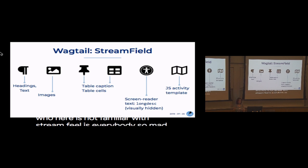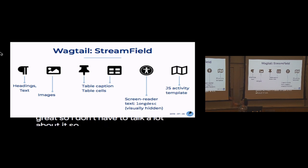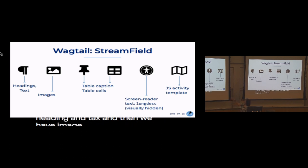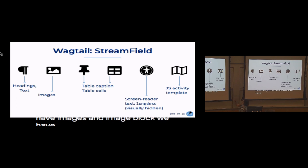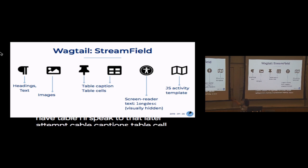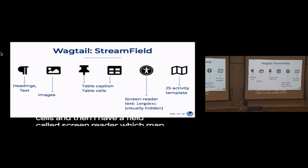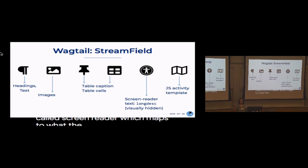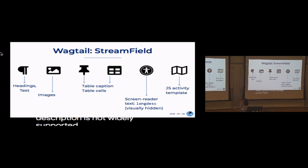For the implementation I use Wagtail StreamField. For heading and text we have Draftail, and then we have an image block. For tables, I'll speak to that later — we have table captions, table cells. And then I have a field called 'screen reader' which maps to what the tag is called — long description — because long description is not widely supported by browsers.